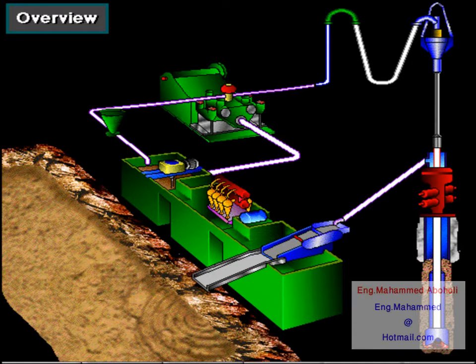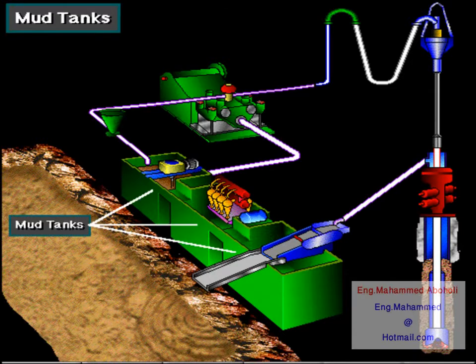The rig uses many pieces of equipment to circulate and treat or condition the mud. Mud circulation begins here in the mud tanks, sometimes called the pits. Crew members prepare the mud in these tanks and make it ready for circulation.